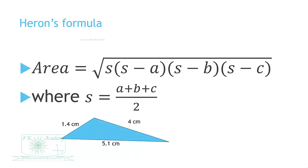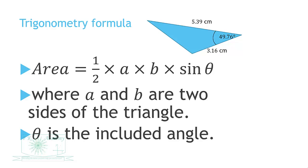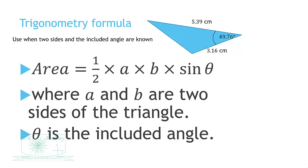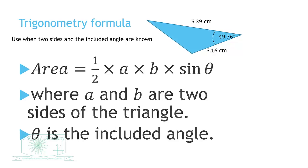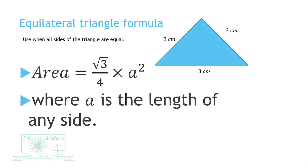Then Heron's formula — when you know all three sides, you can use it. Then we have the trigonometry formula: when you know two sides and the included angle, you can use this formula.